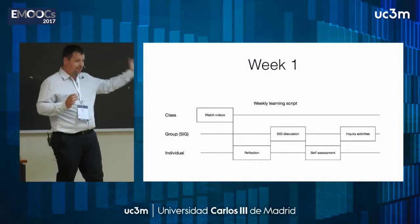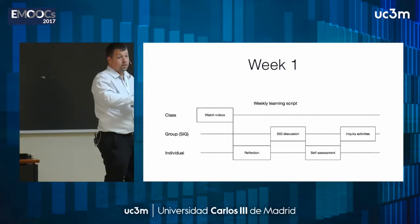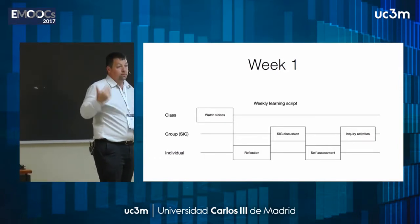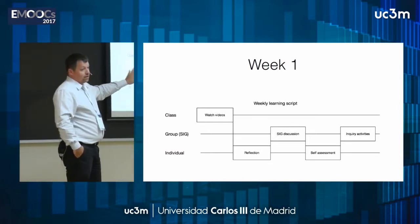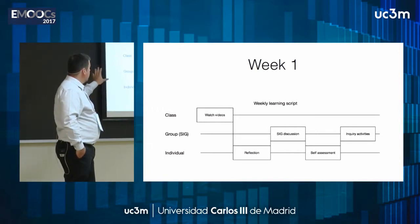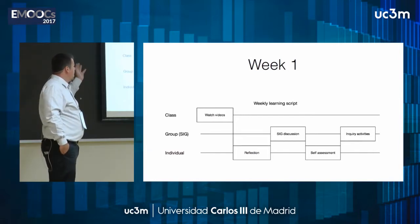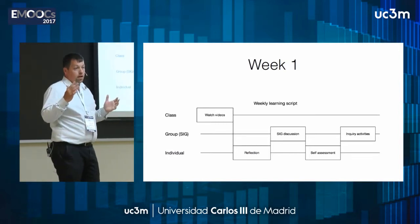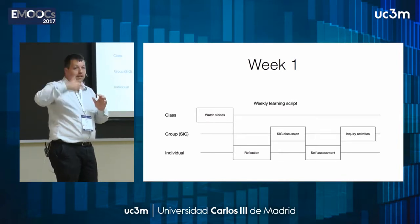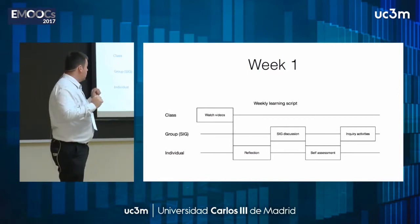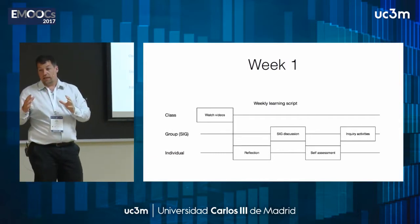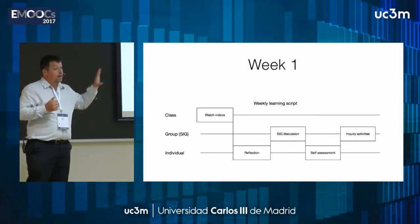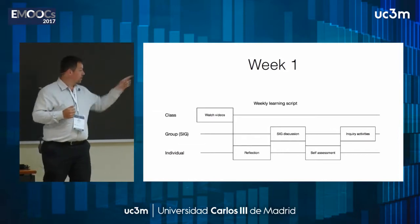Now we're starting week one. We've already found out who people are, their interests, and they've already started populating this knowledge base. We had a weekly learning script for consistency: watch videos, do a personal reflection not shared with anyone, then engage in special interest groups — groups of 200 to 300 people grouped by the age of students they're teaching and the subject area. Then a self-assessment of the discussion, and then the inquiry activities, where the really fun stuff was happening.